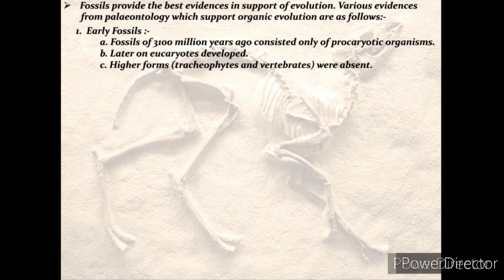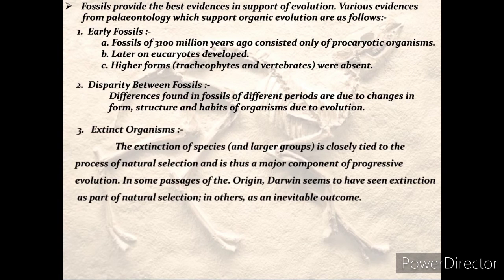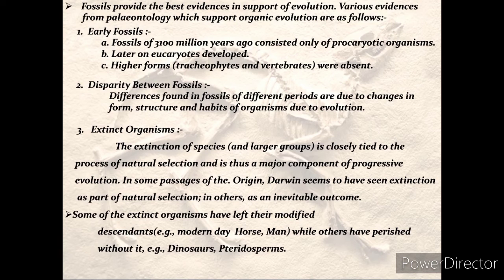The differences found in fossils of defined periods are due to changes in form, structure, and habits of organisms due to evolution. Extinct organisms — the extinction of species is closely tied to natural selection and is a major component of progressive evolution. Darwin saw extinction as part of or an inevitable outcome of natural selection. Notable extinct organisms include the mighty dinosaurs, the toothed bird-like Archaeopteryx, tree-like lycopods, and great mammals that were ancestors of man.